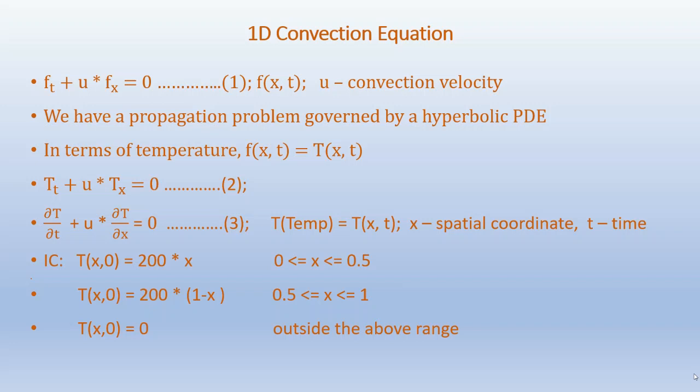The 1D convection equation is given as f_t plus u times f_x equals 0, where f is a function of x and t and u is the convection velocity. F represents the dependent variable and can be temperature, concentration, or other parameters. We have a propagation problem governed by a hyperbolic PDE, so we have to use appropriate finite difference methods to solve this type of problem.